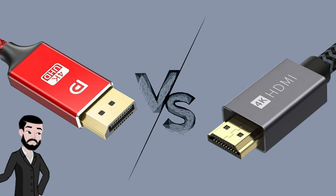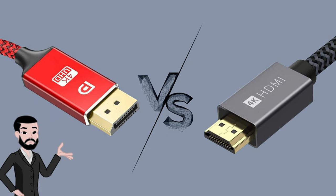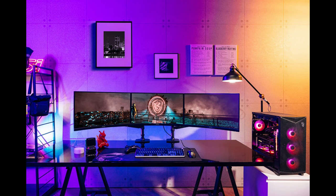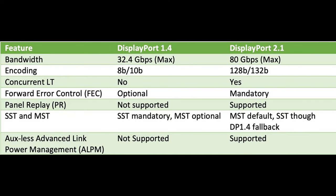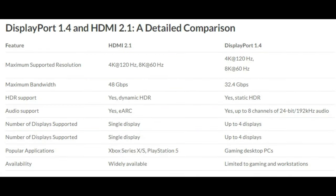DisplayPort 1.4 and HDMI 2.1 are both advanced digital interface standards used for connecting video and audio devices, but they have different specifications, capabilities, and use cases. DisplayPort 1.4 has a bandwidth of 32 gigabits with 10-bit color, while HDMI 2.1 has a bandwidth of 48 gigabits with 12-bit color. They both support high refresh rate gaming and high resolution.